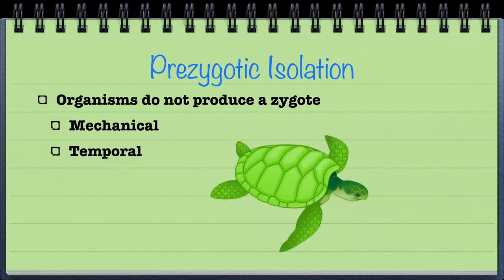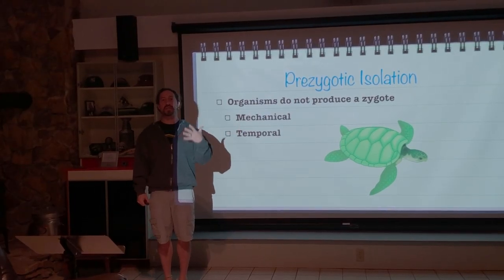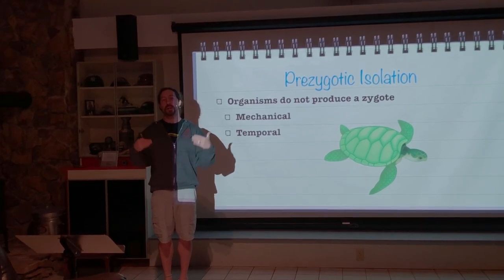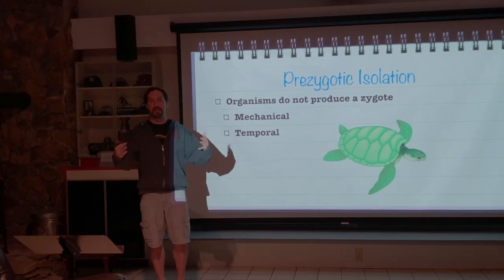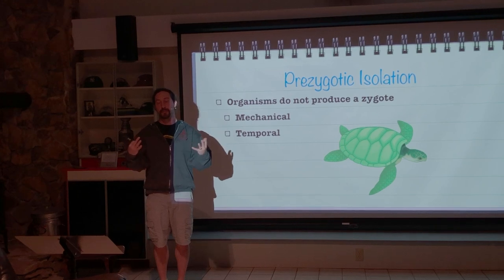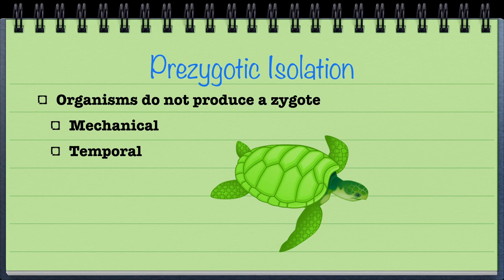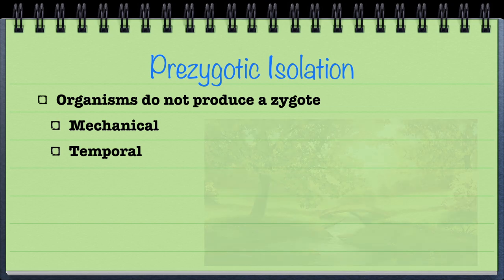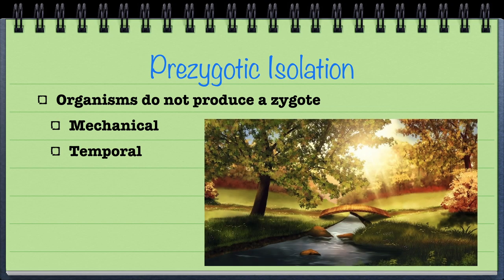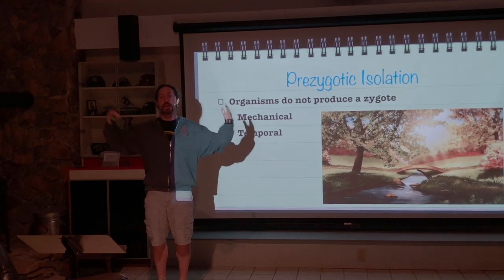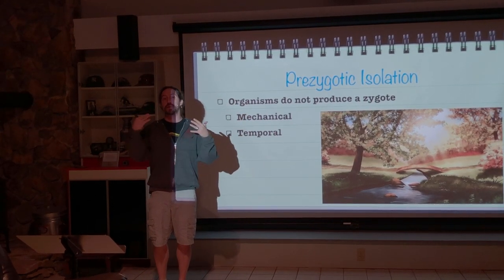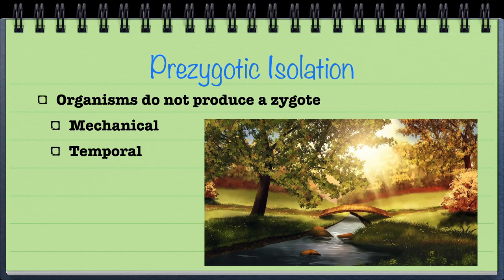Another type of reproductive isolating mechanism is called temporal isolation. Many of you might be aware that at certain times of the year beaches are closed because sea turtles are going there to lay their eggs — sea turtles have a specific breeding season. This also works for plants: if we look at a meadow and think about when pollen is released, it's released from different types of plants at different times. Because these organisms are not breeding at the same time, they won't mate with each other, so they are temporally isolated.